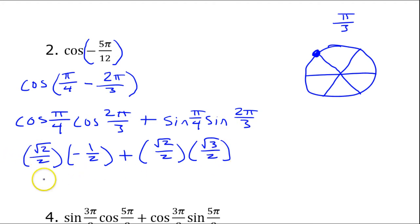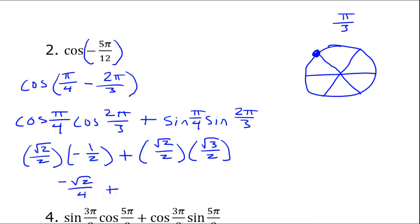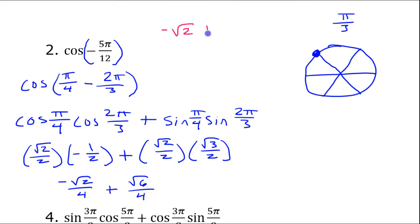Multiplying this together I have negative √2/4 plus √6/4. Adding these up with the like denominator gives me (−√2 + √6) / 4.